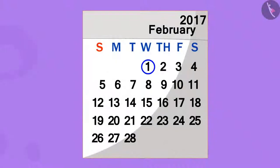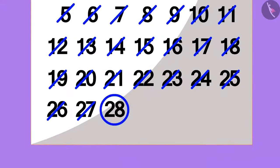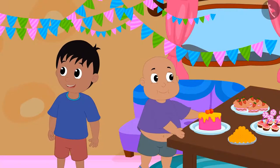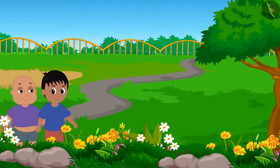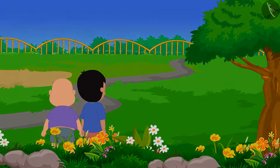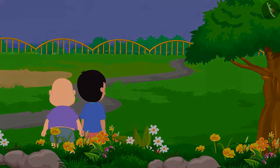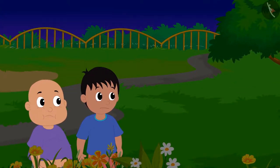Many days have passed, and today the date is 28th February. Raju and Bablu prepared to welcome Jeev. The next day, they kept waiting for him for the whole day, but Jeev did not come.